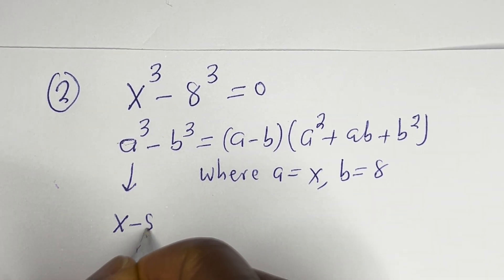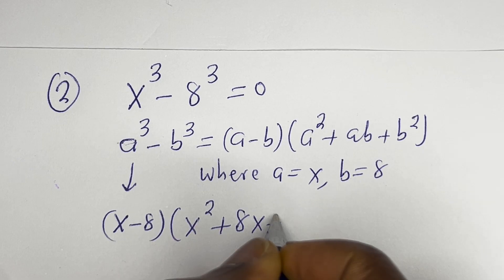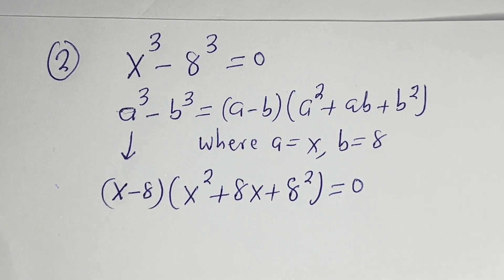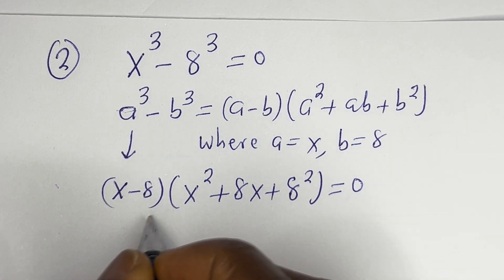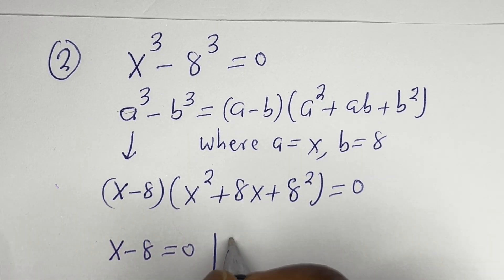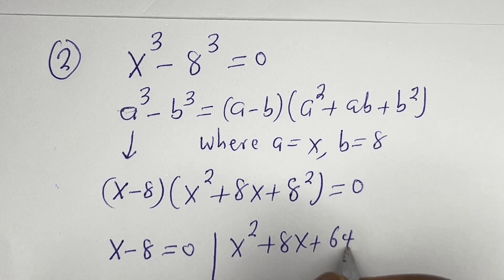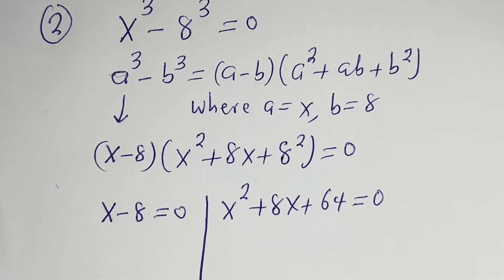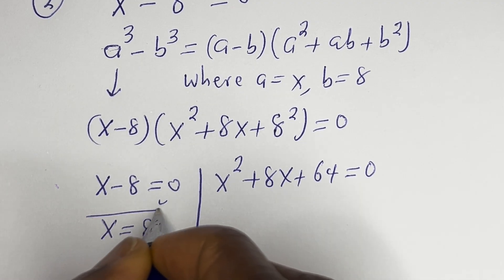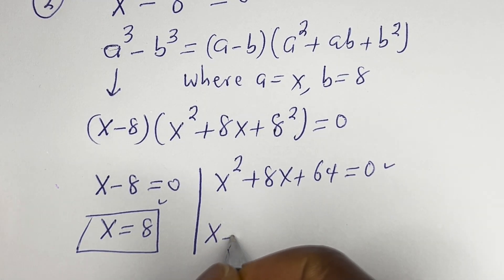So we have (s minus 8)(s squared plus 8s plus 64) is equal to 0. The first sub-case is s minus 8 equals 0, giving s equals 8. This is another value of s and also a solution. The second sub-case gives the quadratic equation s squared plus 8s plus 64 equals 0.